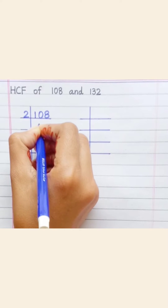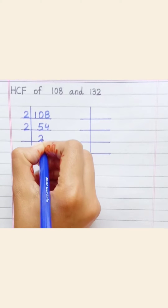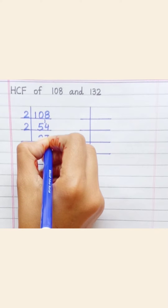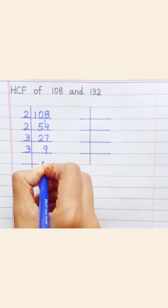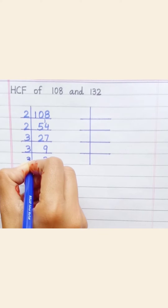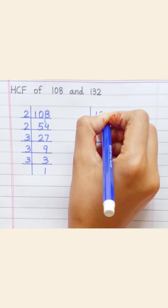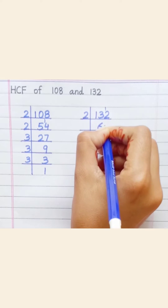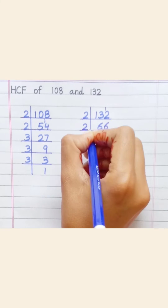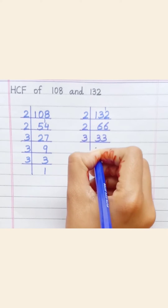108: two fives are ten, two fours are eight, two twos are four, two sevens are fourteen, three nines are twenty-seven, three threes are nine, three ones are three. 132: two sixes are twelve, two sixes are twelve, two threes are six, two threes are six, three ones are three, three ones are three, eleven ones are eleven.